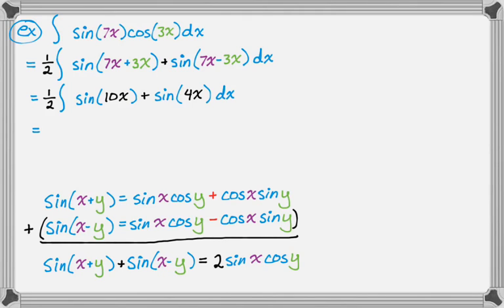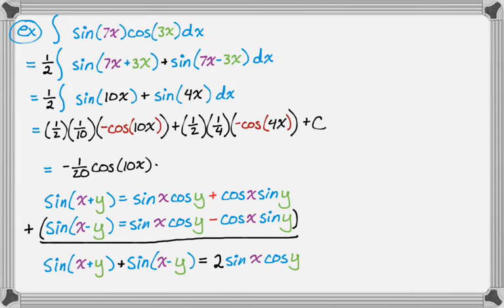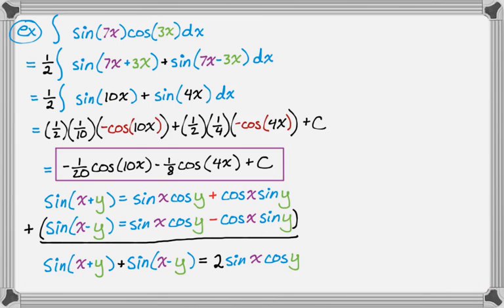Integrating: one-half times one-tenth gives negative one-twentieth cosine 10x, plus one-half times one-fourth gives negative one-eighth cosine 4x, plus C. So the answer is negative one-twentieth cosine 10x minus one-eighth cosine 4x plus C. That's how you integrate all these products of sines and cosines — it all comes down to knowing the sum and difference formulas for sine and cosine. Hope you found this helpful, and good luck!